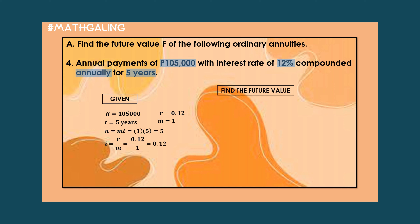Now let's find the future value. Using the formula and substituting our given, it is 105,000 times (1 plus 0.12) raised to the power of 5, minus 1, over 0.12. Using the calculator, the answer is 667,048.9728 pesos.